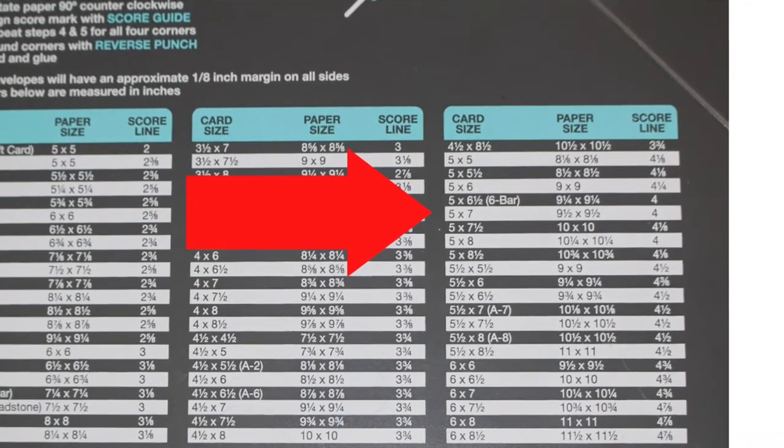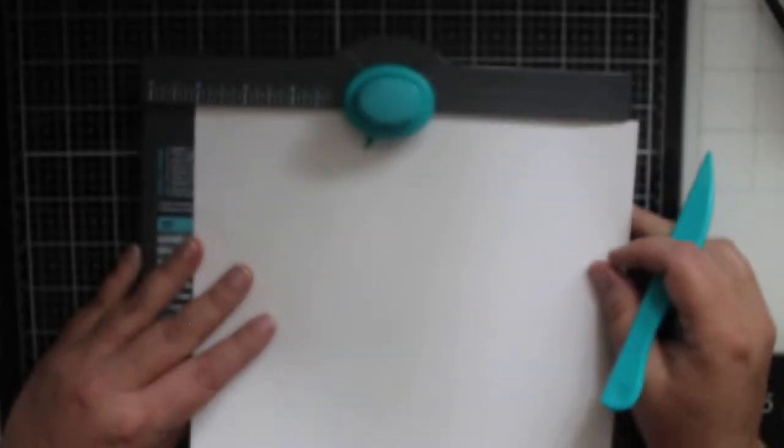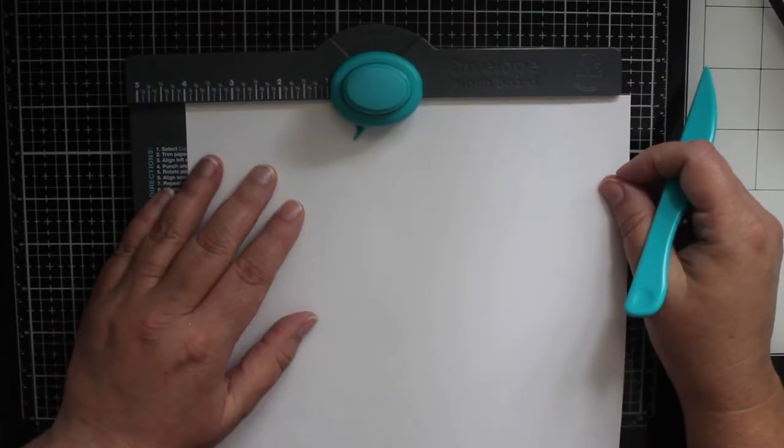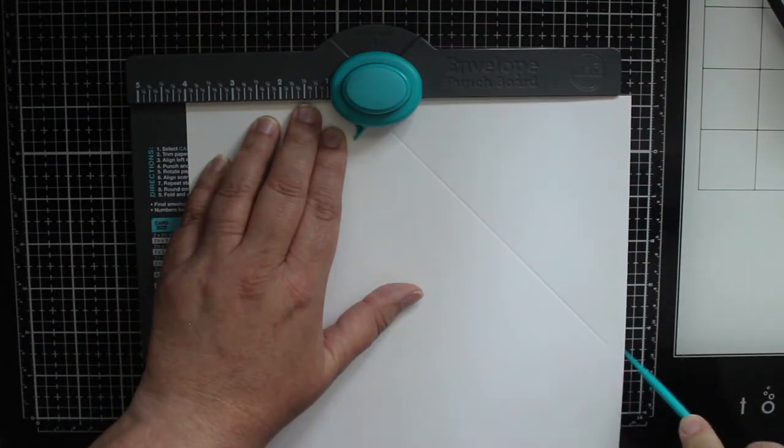To make a larger envelope, in this case for a 5x7 card, the same things apply. I cut down a 12x12 piece of cardstock to 9.5x9.5 inches and lined my paper up to the 4-inch mark.